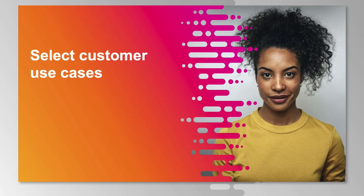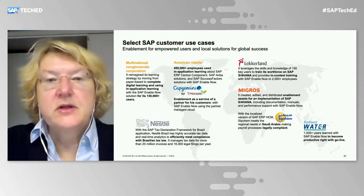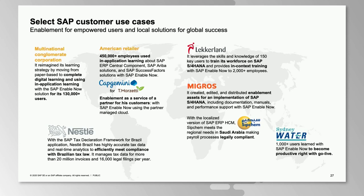Let me talk about select customer use cases — how companies are taking advantage of our offerings. First, a huge multinational conglomerate corporation that re-imagined the way people learn. COVID-19 was a huge trigger — they shifted completely from PowerPoint-based learning delivered in binders to digital learning with Enable Now for more than 130,000 users. We also have an American retailer training their people with regards to COVID-19: creation of learning material for store employees on how to behave with customers, apply hygiene criteria, deal with masks and distance — important procedures documented and rolled out to more than 450,000 employees.